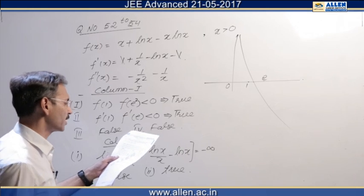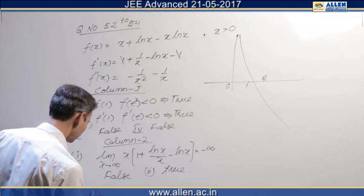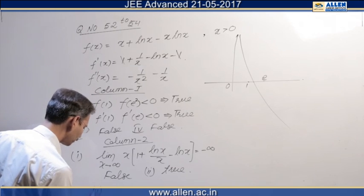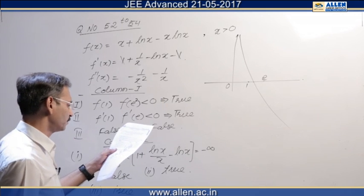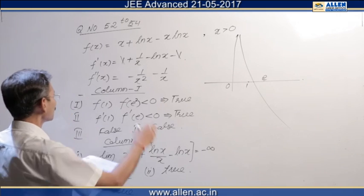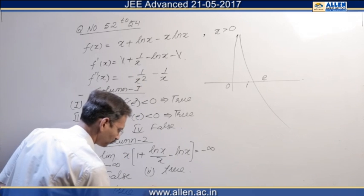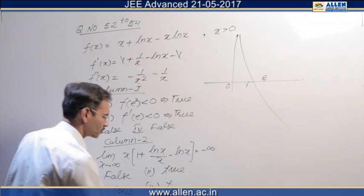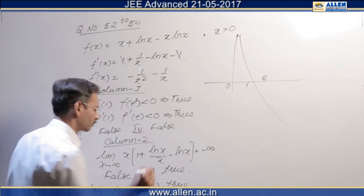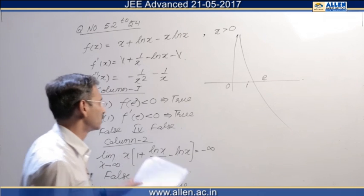About the third statement, we can see the graph. It is absolutely right. And the fourth one, we can use this expression. As x approaches infinity, both are approaching 0. That's why this statement is also true. Now let's come to the third column.